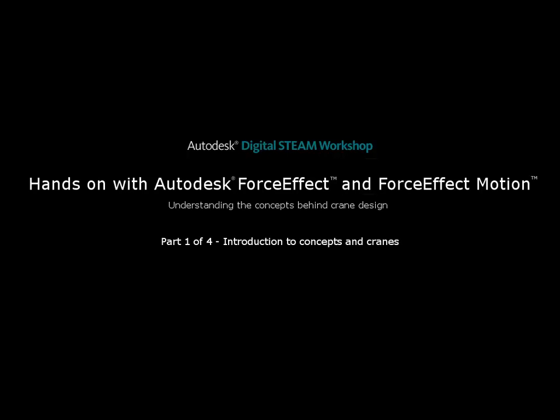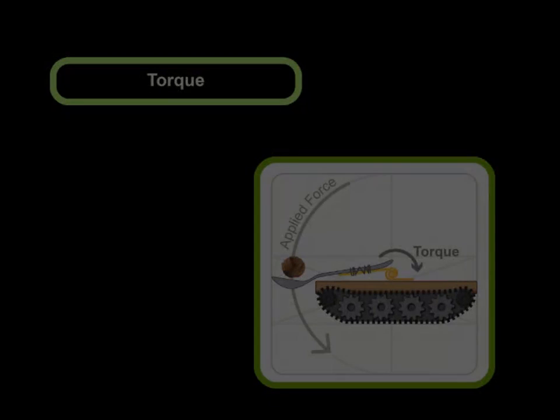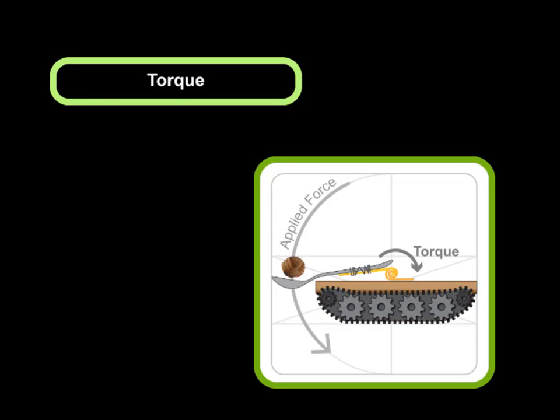We'll also look at several different types to understand how they work. There are a few concepts that are important to understanding the design of a crane. The first is torque, which is the tendency of a force to rotate an object around an axis.